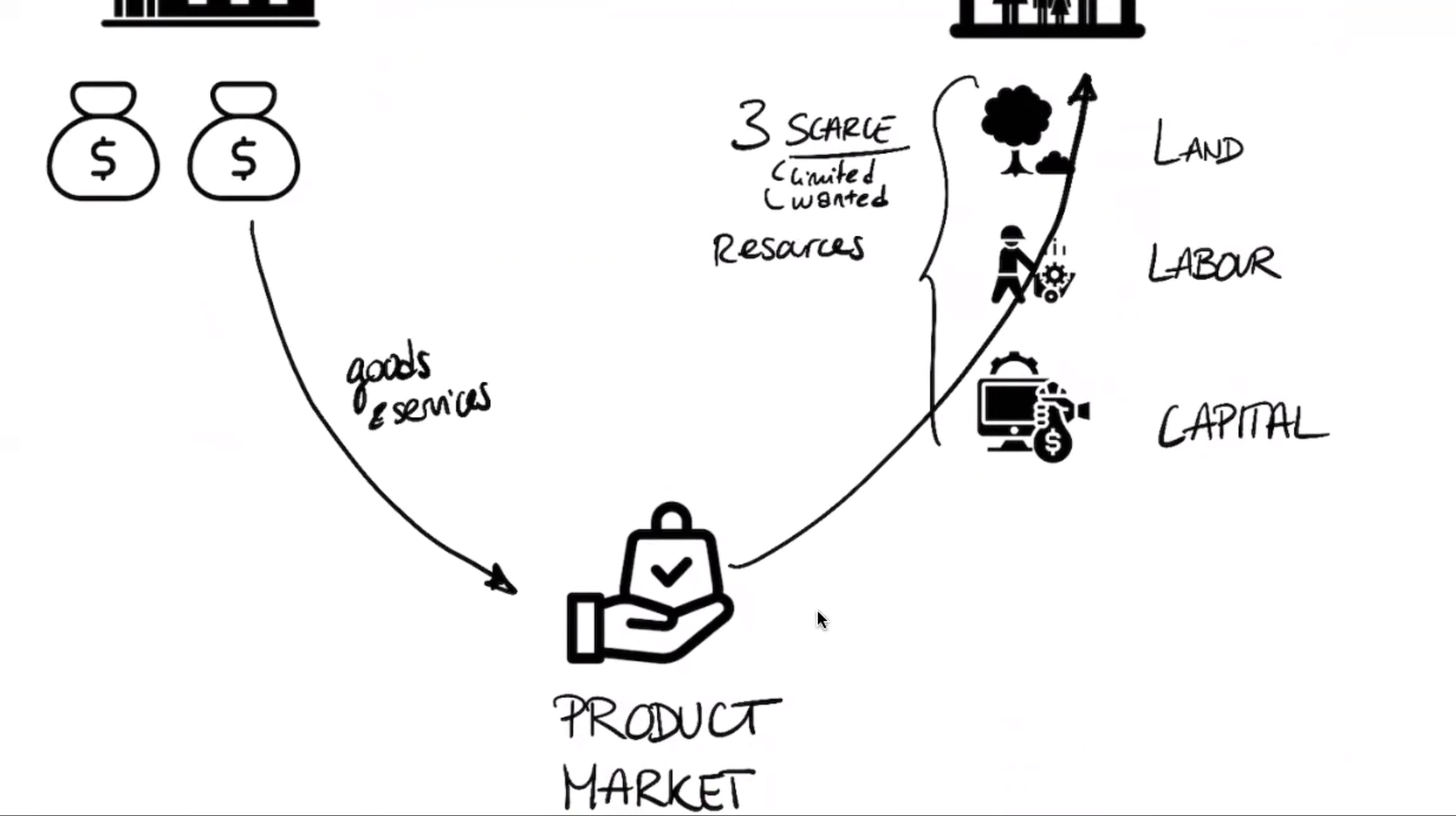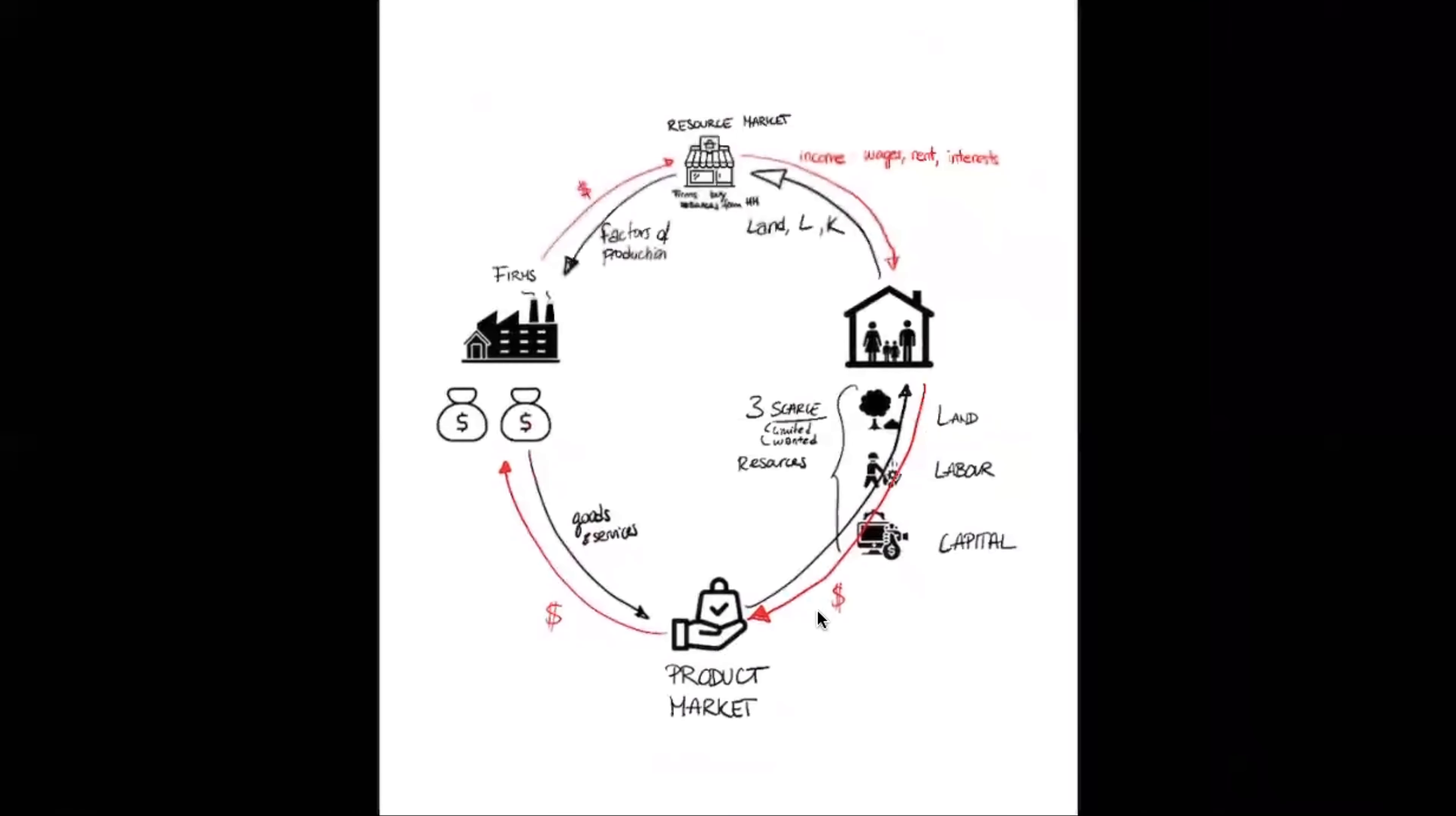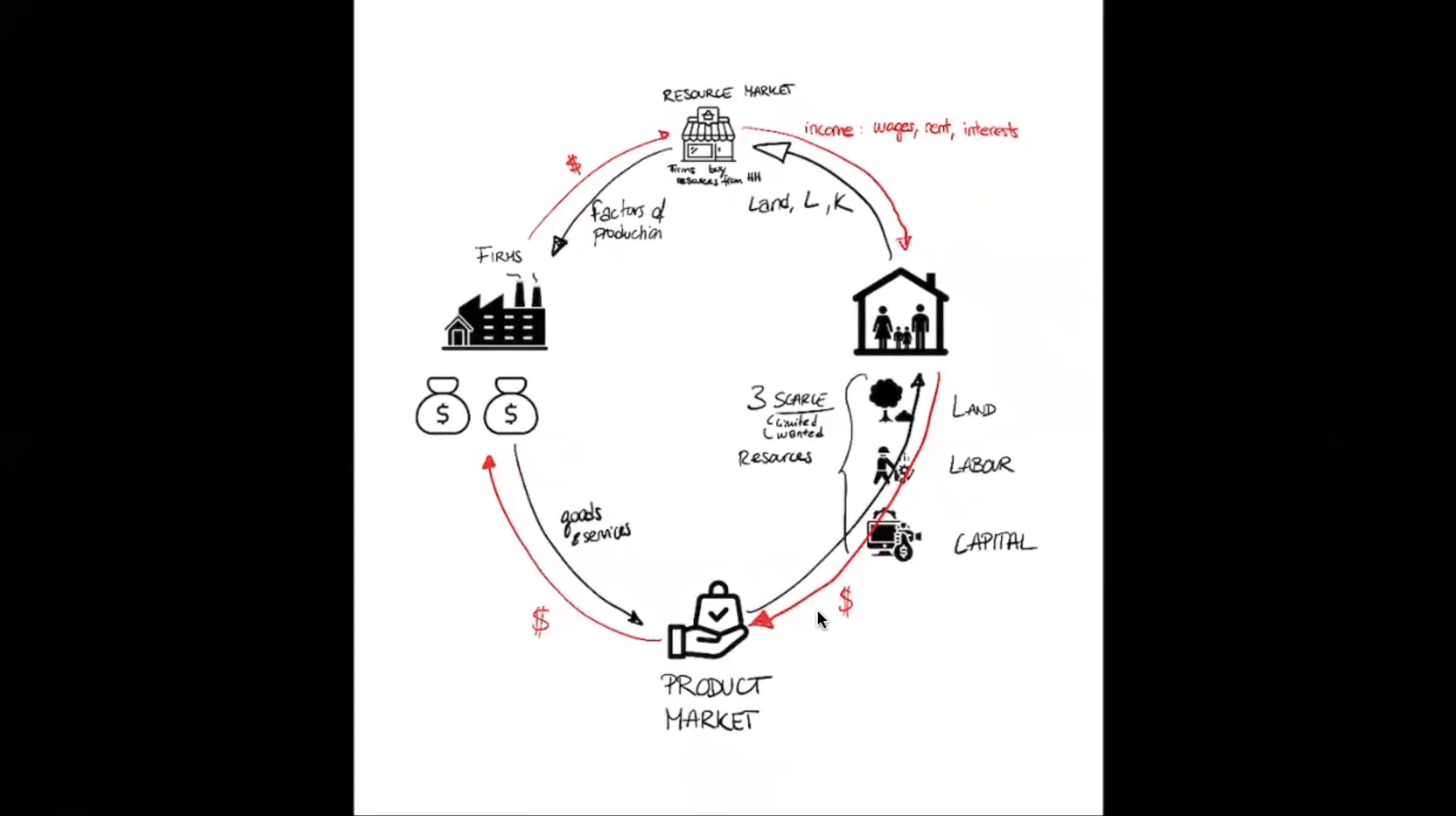And these goods and services are brought to the households. How do the households get these goods and services? Well, of course, they pay for it. When you go to the shop and you want to buy an apple, you're going to pay for it. So still in red, that money flow. And with that money, the firms can invest back into factors of production and so on and so forth.